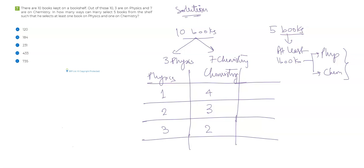This is where the main confusion starts — deciding when to add and what to multiply. Let me write down the number of ways to select for each case. We have to select one book out of three physics books: that's 3C1. If I choose four chemistry out of seven, I write it as 7C4. Similarly, I can choose two physics in 3C2 ways and three chemistry out of seven in 7C3 ways. And I can choose three physics out of three in 3C3 ways and two chemistry in 7C2 ways.